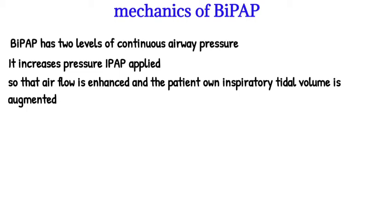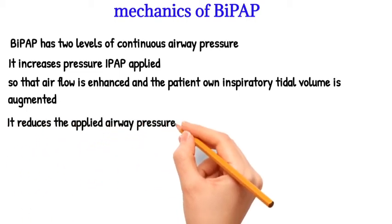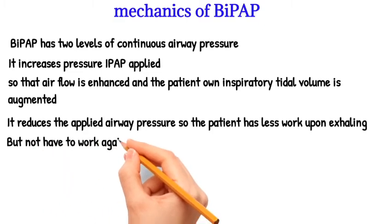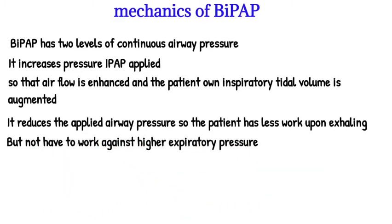When the machine senses flow is slowing or stopped, it reduces the applied airway pressure so the patient has less work upon exhaling, but maintains a continuous positive expiratory pressure. This allows the patient to receive higher inspiratory pressure but not have to work against higher expiratory pressure. In addition, the machine can be set to deliver a fixed respiratory rate.